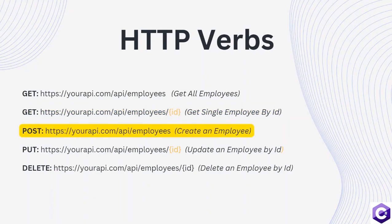Then we also have the POST HTTP verb. The URL for POST is similar to the get-all-employees URL, pointing to yourapi.com/api/employees. Because this is a POST HTTP verb, it means that we are using this to create a new resource — in this case, creating a new employee.